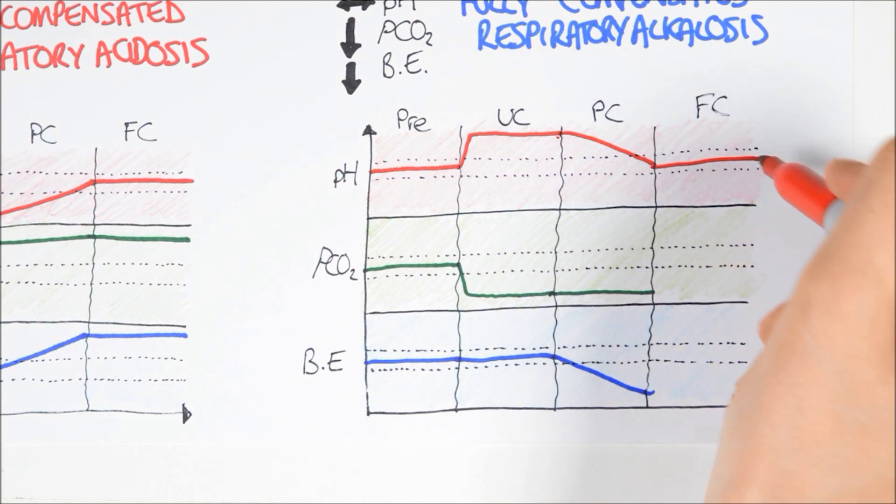Once pH is back to normal, you can see that the PCO2 is still low, assuming the patient is still hyperventilating, of course, and that the base excess is still low because the kidneys are compensating.